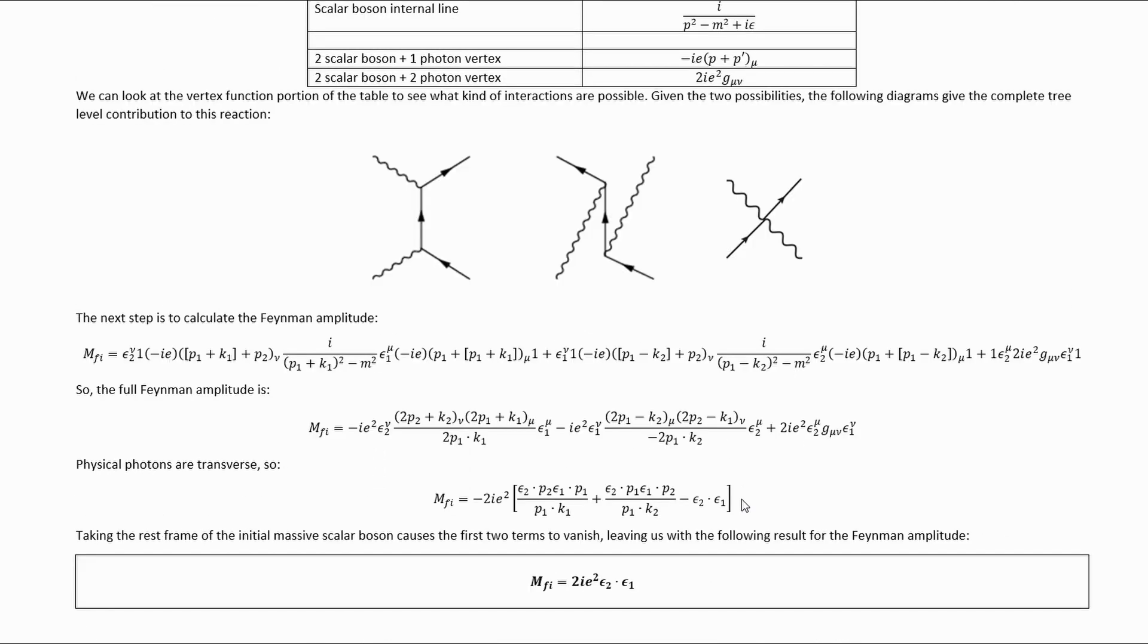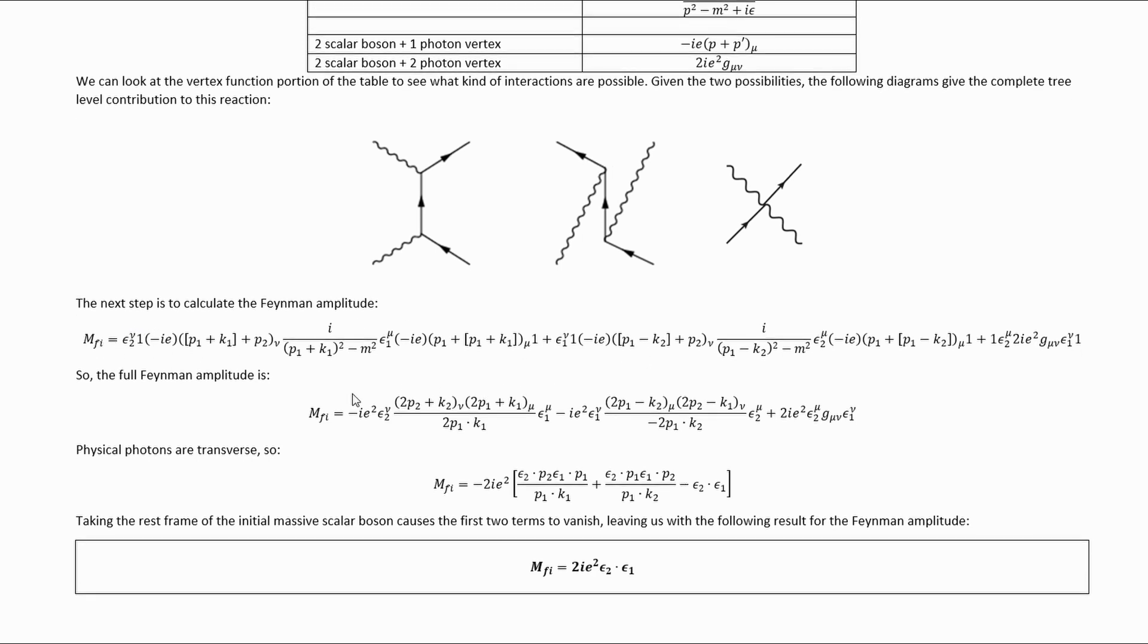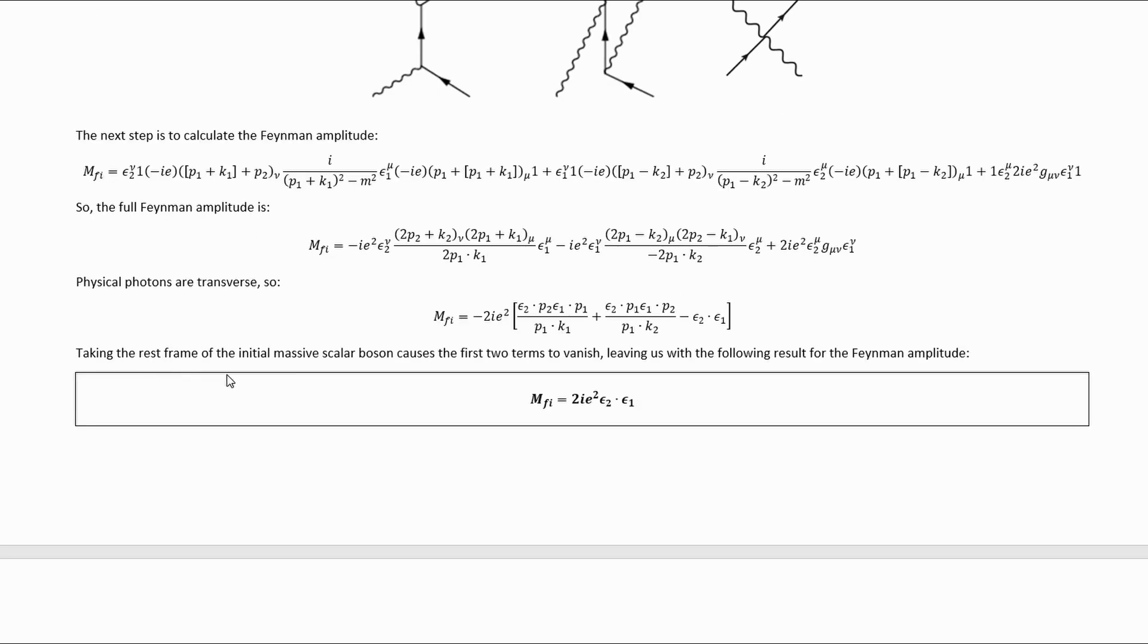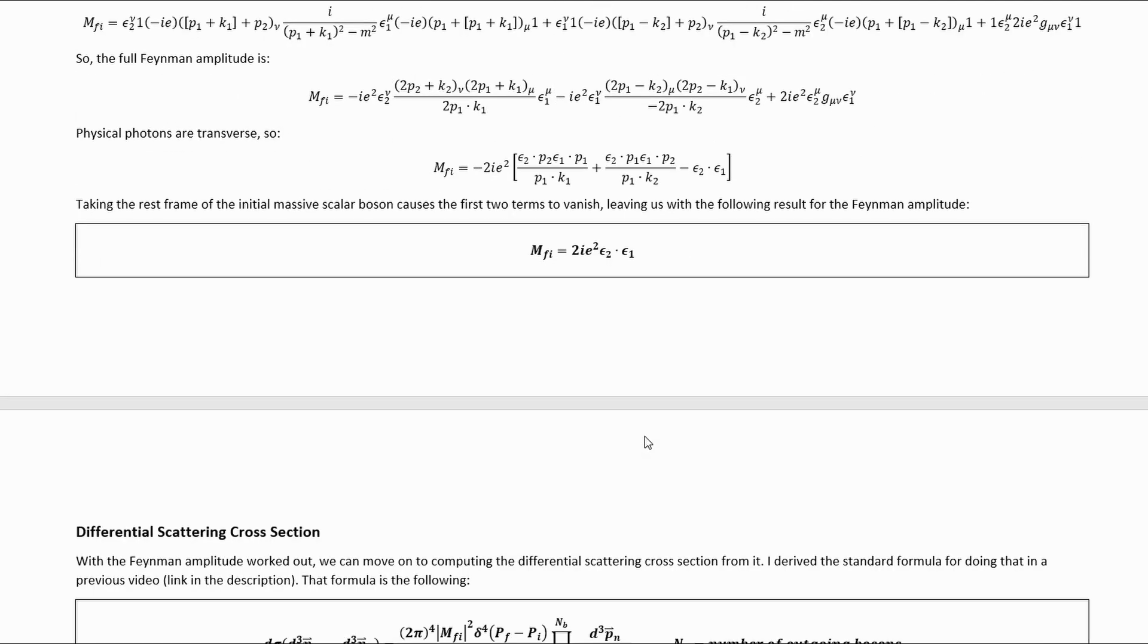If we apply the Feynman rules in that table to these Feynman diagrams, what we get is this Feynman amplitude, which we can simplify down trivially. Physical photons are transverse, so this simplifies down further. Then we can take the rest frame of the initial mass of scalar boson, and that causes these two terms to vanish, leaving us with this very simple Feynman amplitude.